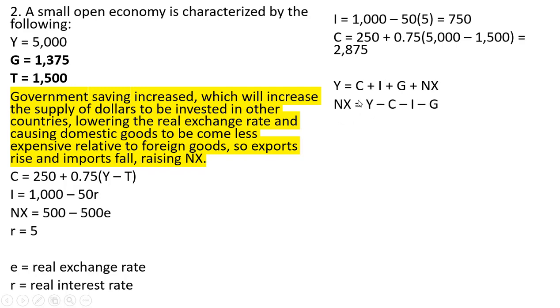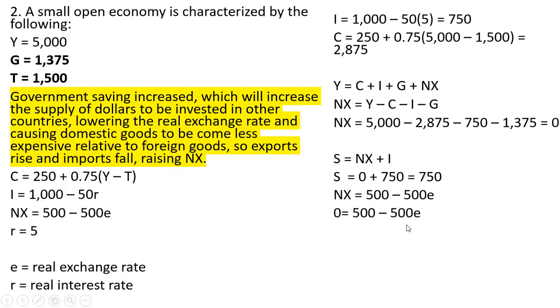Solving for net exports, net exports in this example is going to be zero, so exports will equal imports. Recognizing that savings equals net exports plus investment, national saving here is now higher at 750 compared to example one. Looking at our net export equation and plugging zero in for net exports, solving for the real exchange rate, the real exchange rate here is now 1. So this is exactly what we predicted would happen due to this increase of saving going on in this economy.